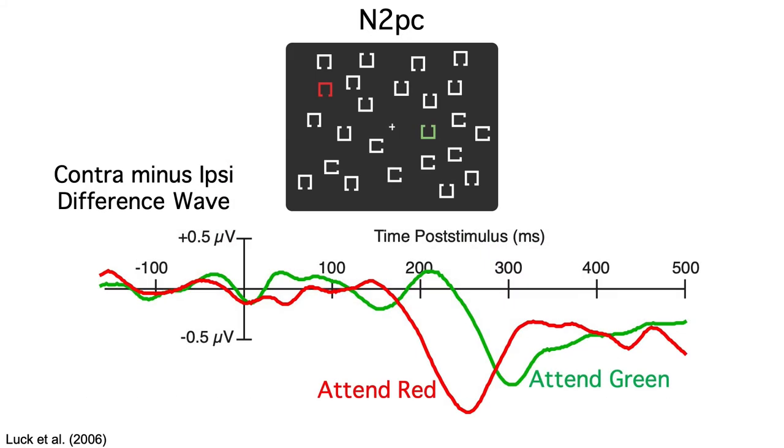Here are the contra minus ipsi difference waves. You can see that the N2PC is delayed about 50 milliseconds in the attend green condition. The difference wave onsets at around 180 milliseconds for attend red and around 230 milliseconds for attend green.